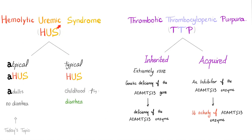Hemolytic uremic syndrome is divided into atypical and typical. Typical is known as diarrhea positive. Atypical is known as diarrhea negative and is also called the primary HUS. Typical is the secondary HUS because it's secondary to E. coli O157:H7. TTP, on the other hand, is inherited or acquired.